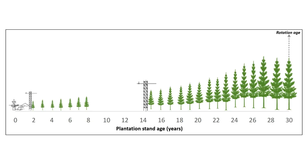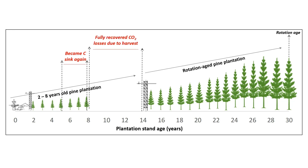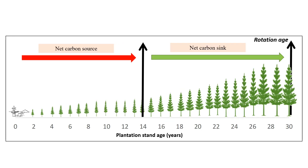We also found that newly established pine plantations become carbon sinks, or regain their status as a carbon sink, five to eight years after harvest. We were able to recover the total carbon loss due to logging eight to 14 years after harvest. Overall, we found that these plantations have a net carbon uptake only during about half of their 25-year rotation period, possibly decreasing climate mitigation potential in comparison to protecting primary forests.